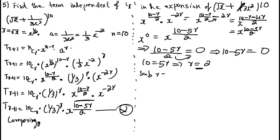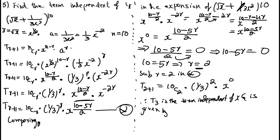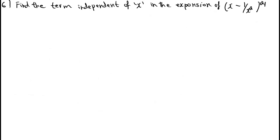Substitute r = 2 in equation (★): T₃ = ¹⁰C₂ · (1/3)² · x^0. Therefore the 3rd term is the term independent of x, given by ¹⁰C₂ · (1/3)². Simplify this value.